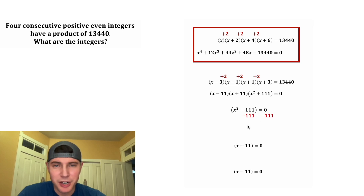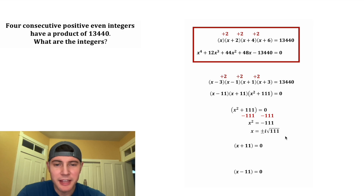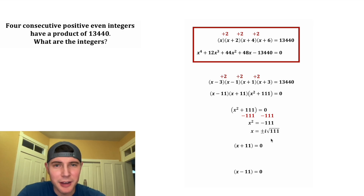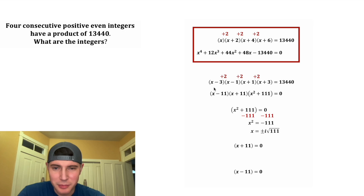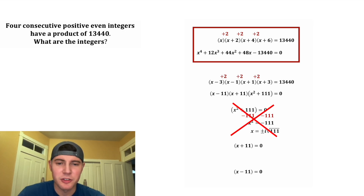For x squared plus 111 equals zero, subtracting 111 gives x squared equals negative 111, which has two imaginary solutions: plus or minus i times the square root of 111. After plugging in, this won't give a positive even integer, so this is not a valid solution.